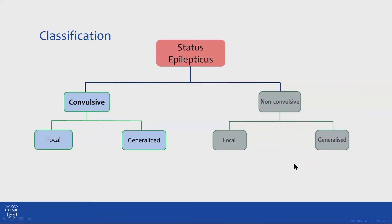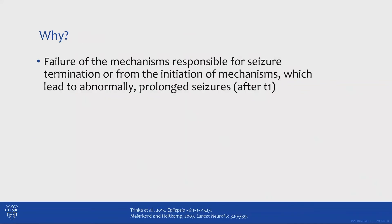In terms of clinical presentation, status epilepticus can have convulsive status — where you would see some motor activity during the seizure — or non-convulsive status epilepticus. You could either have focal or generalized semiology or EEG features in them.